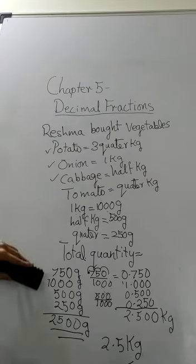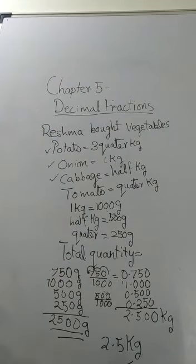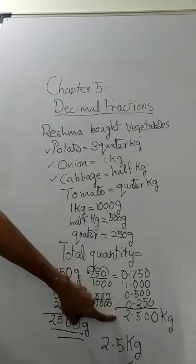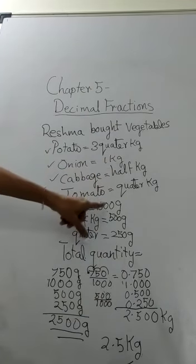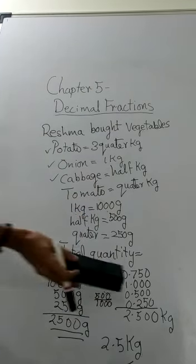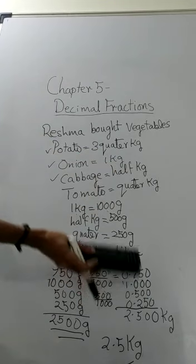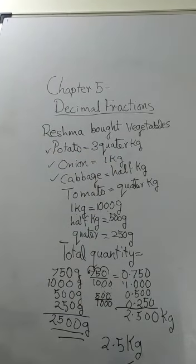We did the gram addition just to show the similarity. When dealing with other problems, you just have to do the decimal addition. Since we are dealing with kilogram and gram, there are 3 decimal places. When dealing with rupees and paise, there are 2 decimal places. So we have done one example with 2 decimal places and one with 3 decimal places. Is it clear?